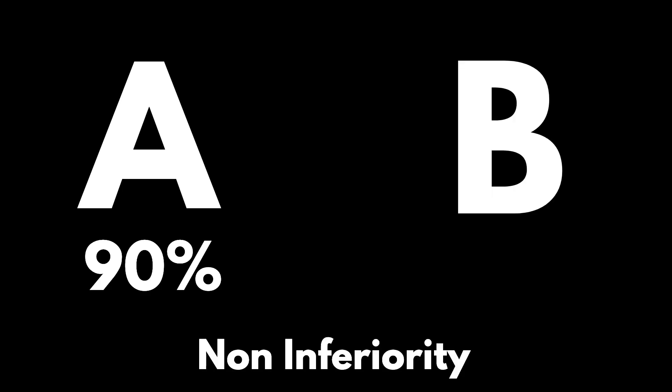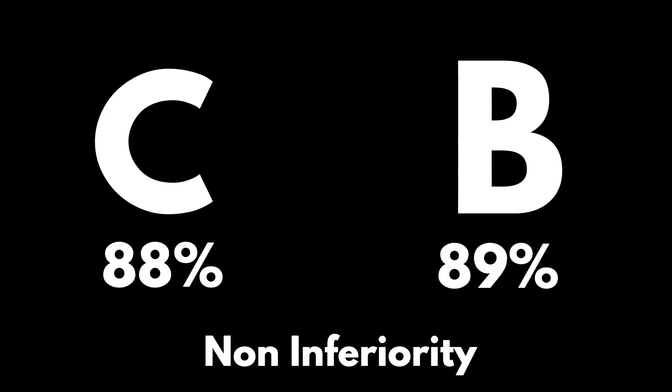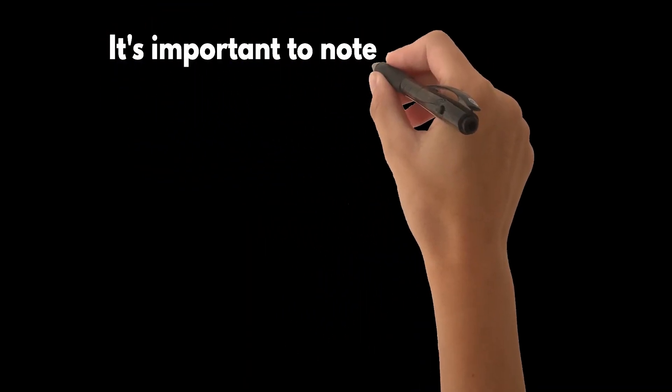Suppose we have a highly effective drug A that cures a particular disease in 90% of cases. A new drug B is developed, and a non-inferiority trial is conducted comparing B to A. The results show that drug B has an effectiveness of 89%, which is within the non-inferiority margin set for the trial. So drug B is considered non-inferior to drug A. Now a third drug C is developed. A non-inferiority trial is conducted comparing C to B, not A. The results show that drug C has an effectiveness of 88%, again within the non-inferiority margin. So drug C is considered non-inferior to drug B. If this process continues over several generations of drugs, we could end up with a drug that is still considered non-inferior, according to the trials, but significantly less effective than the original drug A. This is the phenomenon of bio-creep.